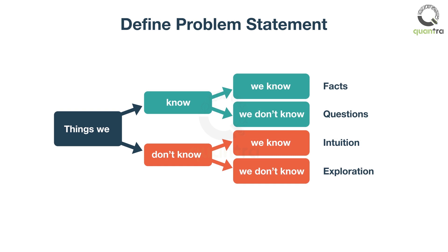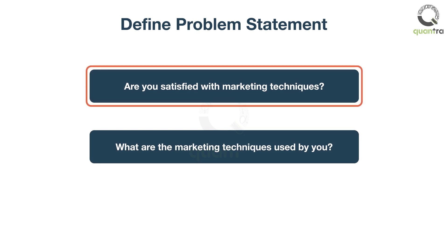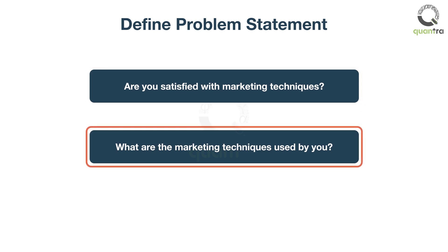Open-ended questions help to uncover unknown unknowns — the things which you don't know you don't know. Consider these two questions. The answer to the first question, such as yes or no, doesn't help much in exploration or creating a well-defined problem statement. The second question can lead to broad and informative answers, and can be followed up by specific questions to clarify or probe further.